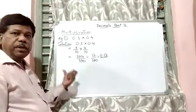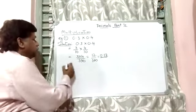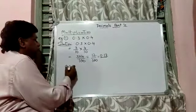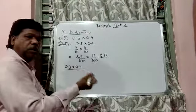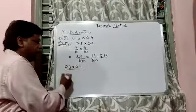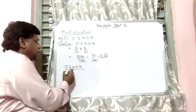So the same thing can be achieved by another method. So 0.3 and it is multiplied by 0.4. Multiply it in the normal way. 4, 3, it is 12.